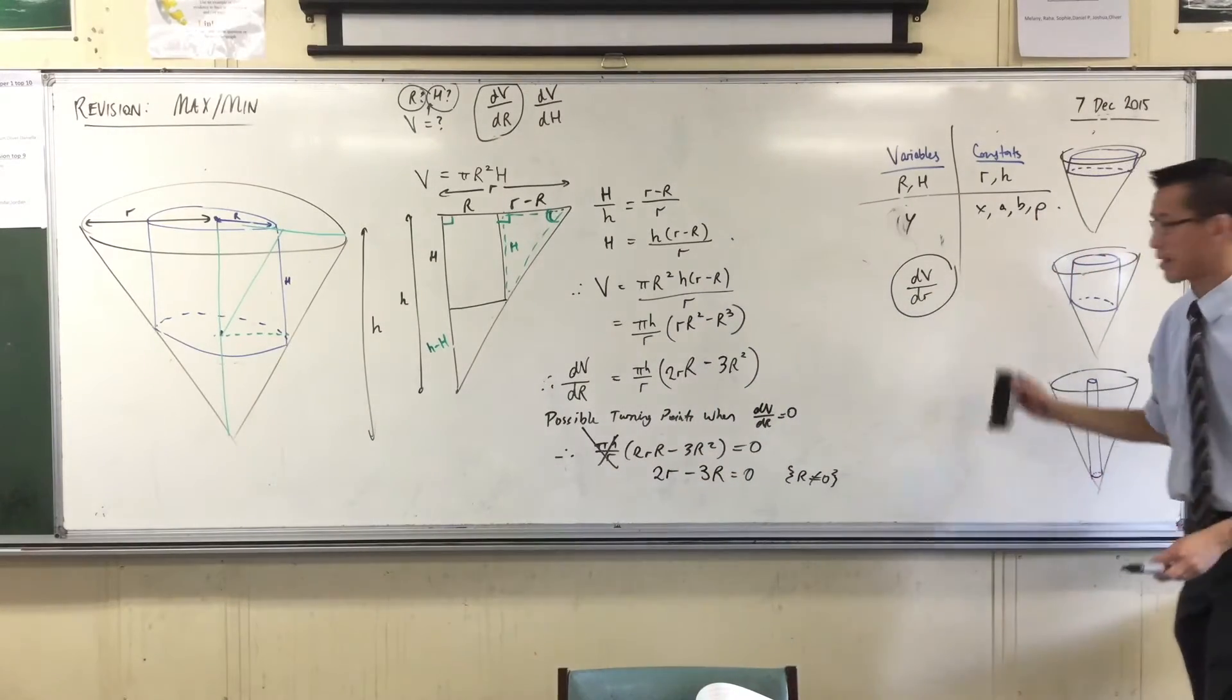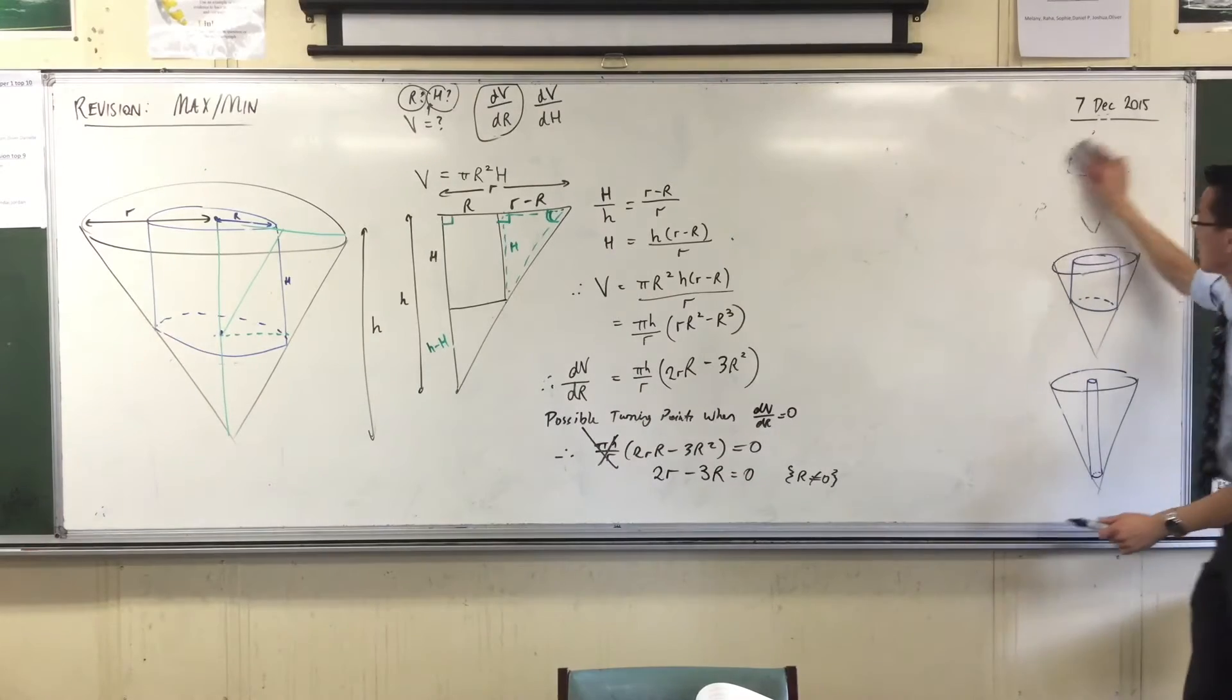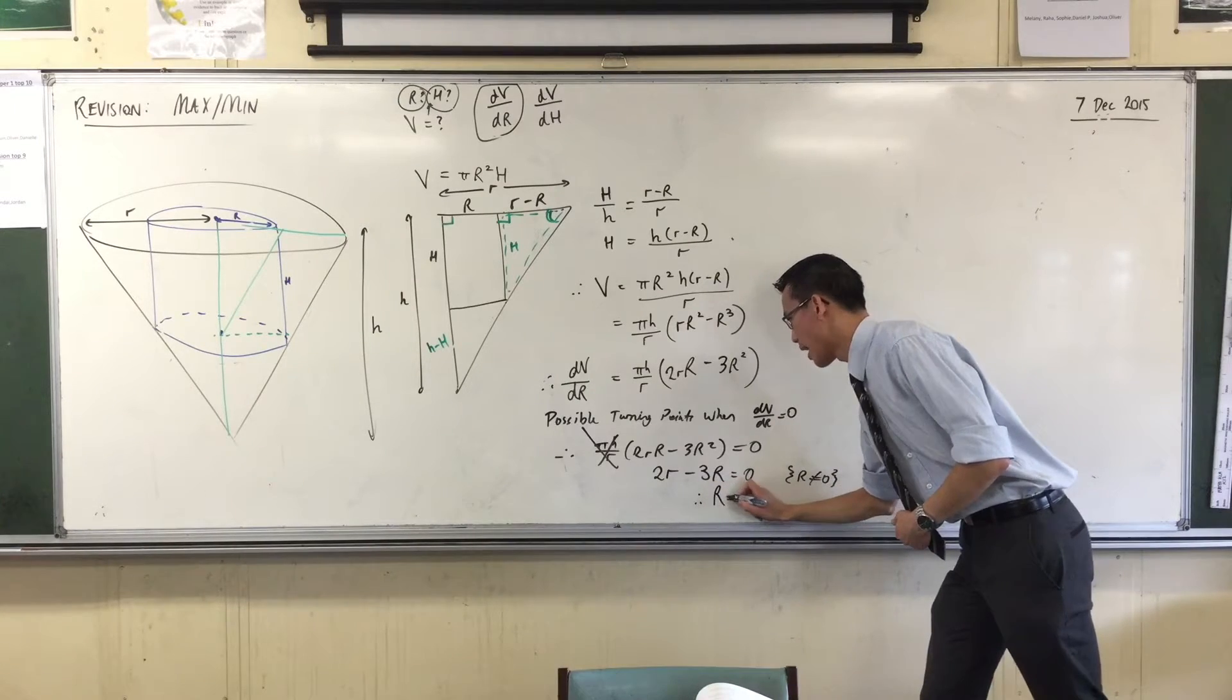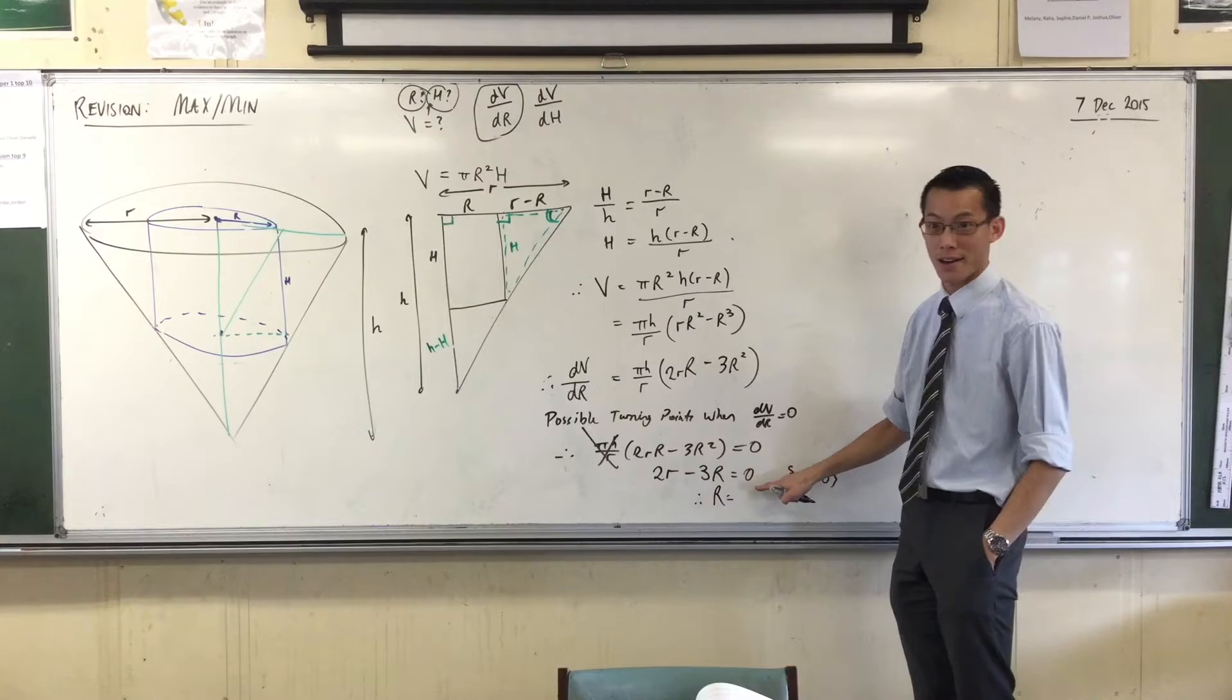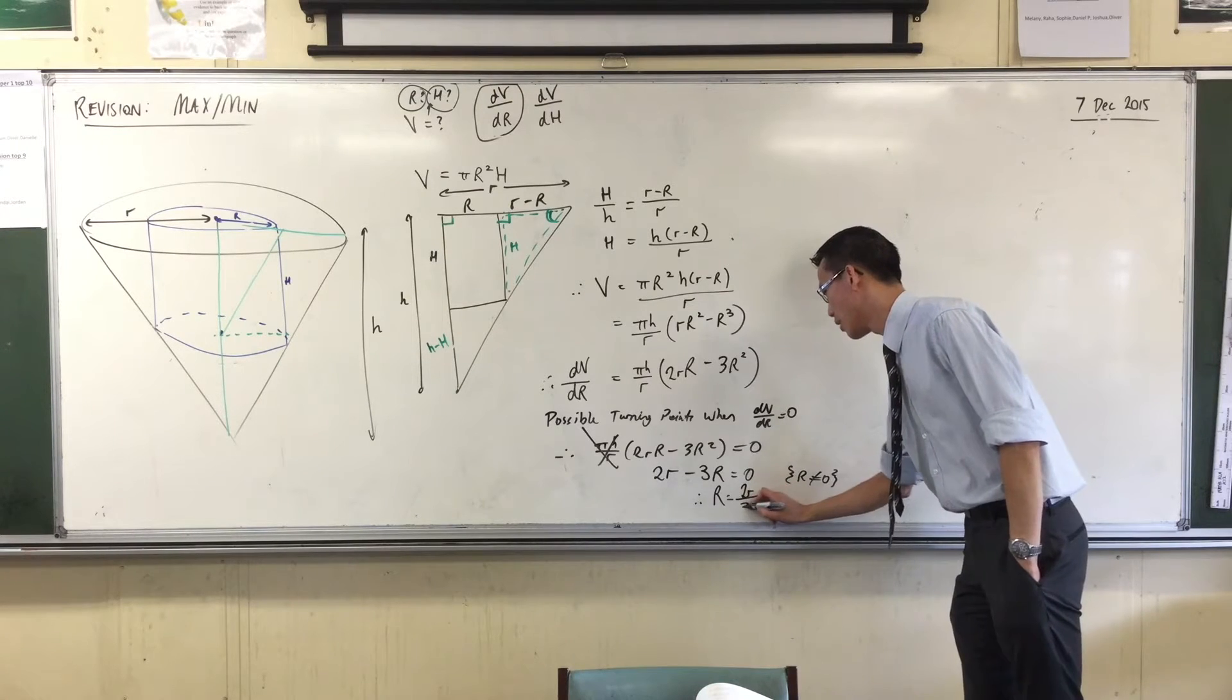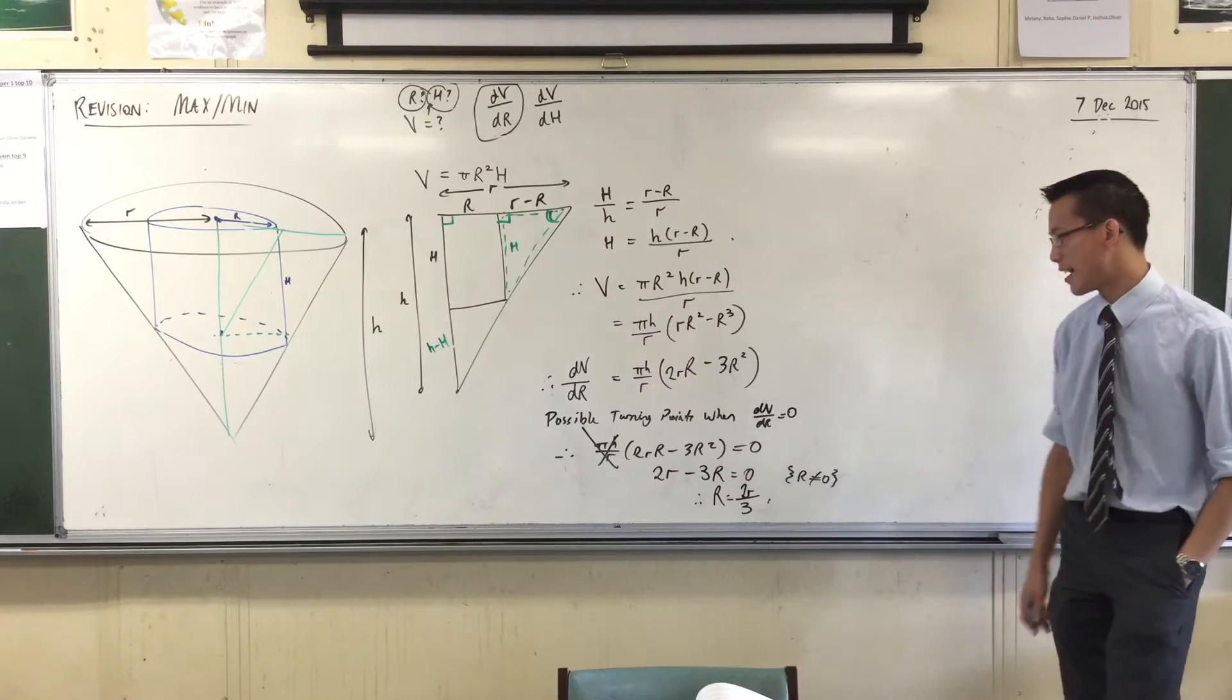So from there, I'm just going to make a statement. What is the actual value of capital R that I'm suspecting is where my turning point is? It looks to me like I'm going to say three R equals two r, right? Three big R equals two little r. So therefore, big R is just two little r on three. That's where I think there's a turning point.